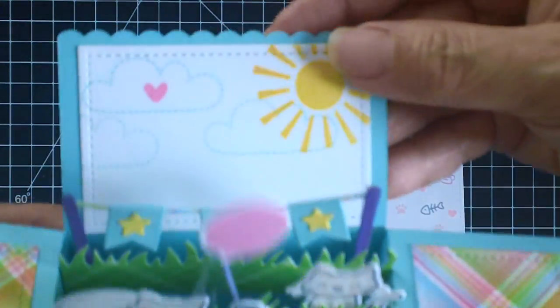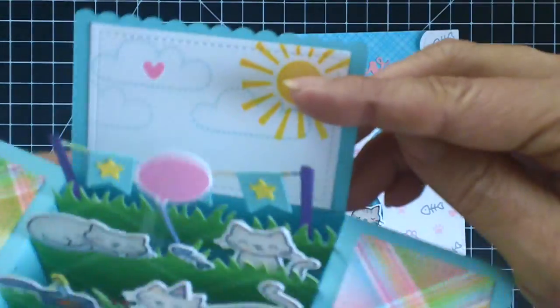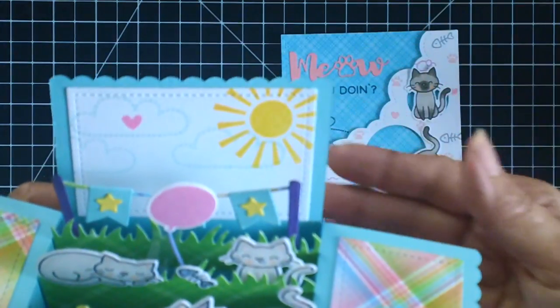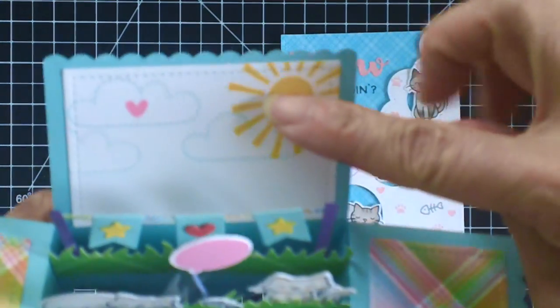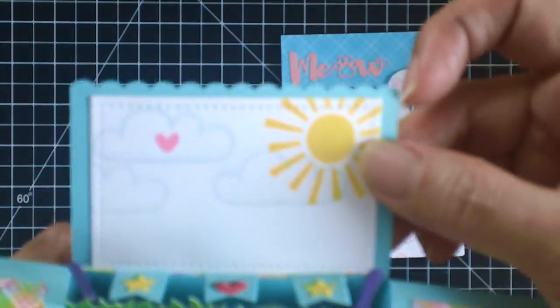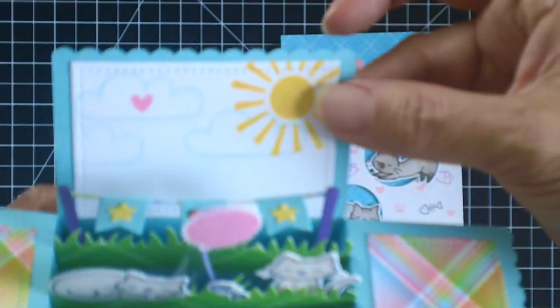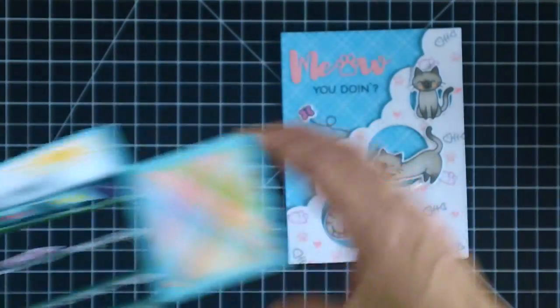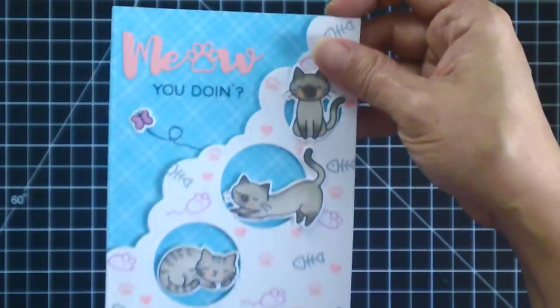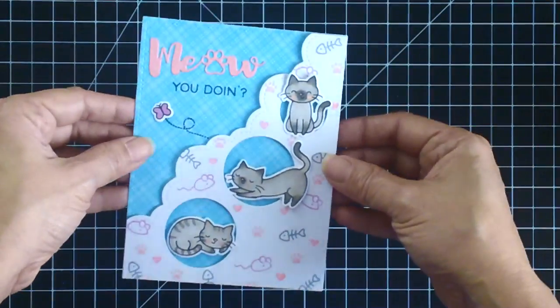See the balloon there, and that's another stamp set from Lawn Fawn. I have a lot of Lawn Fawn products because I really love Lawn Fawn. This is called hello sunshine, that's the stamps that I used, and I stamped the clouds and the Sun, and then I used a stamp set with the cats, colored them in with my Copic markers. Really cheerful card.